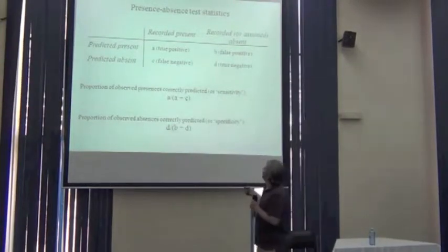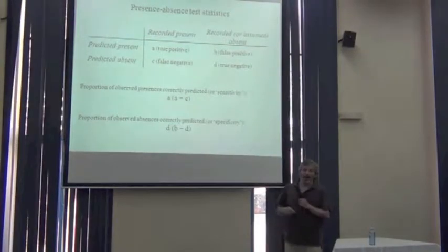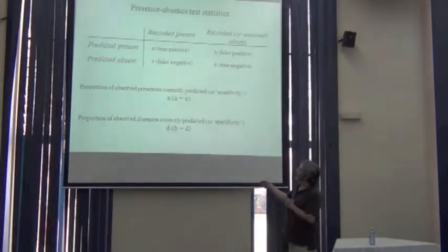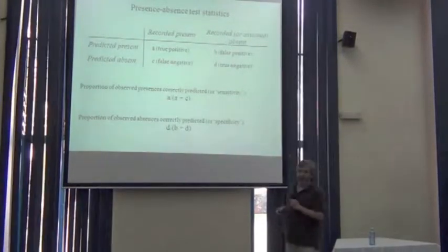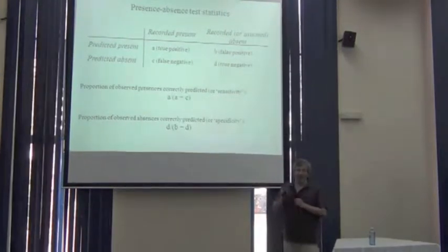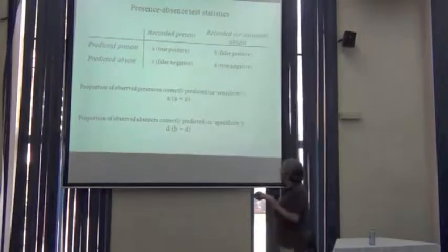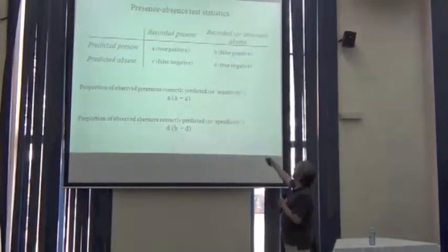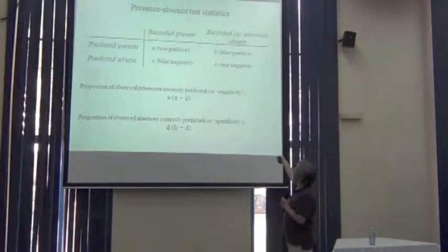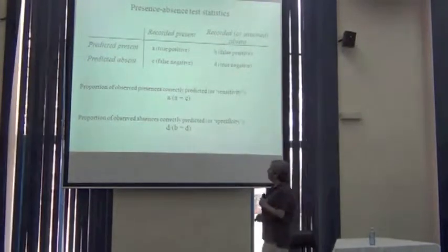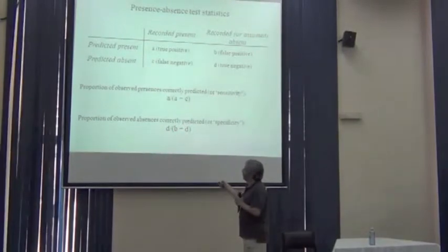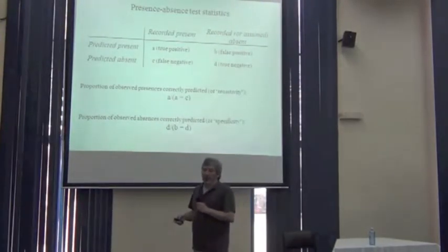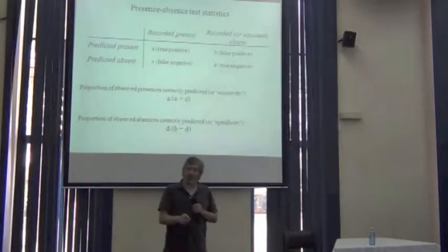Then, Richard sets us up for another use that we're going to make out of confusion matrices. It's the proportion observed presences correctly predicted, and it's A over A plus C. That's also called sensitivity. We can calculate a corresponding statistic, which is the proportion of observed absences correctly predicted. So here, how much of this column is in the correct prediction category? That's called specificity, D over D plus B. So the reason why we show you those two statistics is that we're going to use those when we shift to threshold independent approaches.